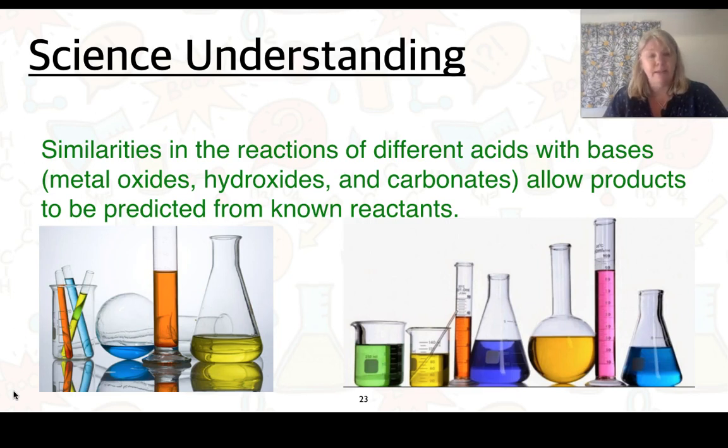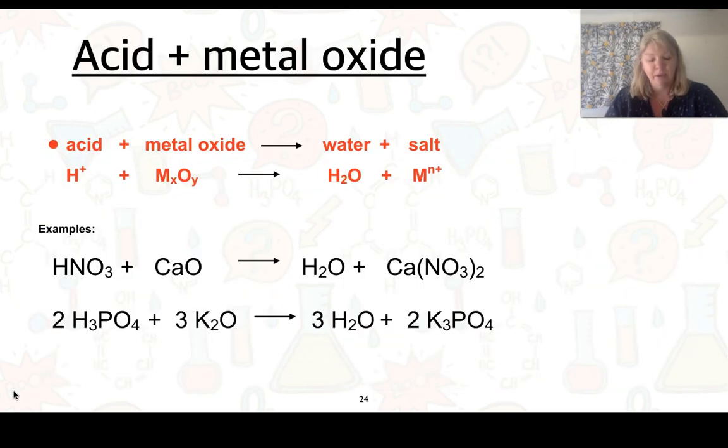Our last science understanding that we need to look for this one here is that we've got different types of equations and we can predict the products if we know what reactants we have. So here's our general equation here, an acid plus a metal oxide, an acid plus a metal oxide will go to water and a salt. Here's our general and I've given you two examples here. So here's our acid with our metal oxide and it's going to water and a salt. You need to make sure they are balanced. So we would need to put a 2 in the front of this one here. And now we have a balanced equation. The second one here I have balanced already. And so we have our acid plus our metal oxide and it's going to water and here's our salt.